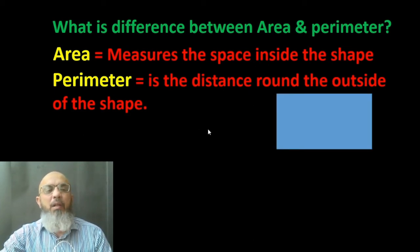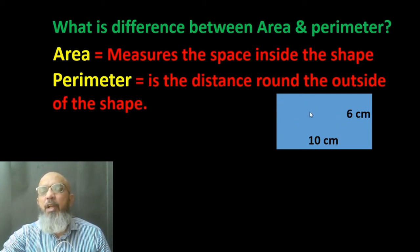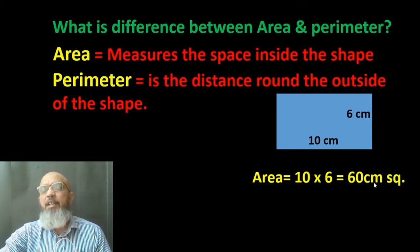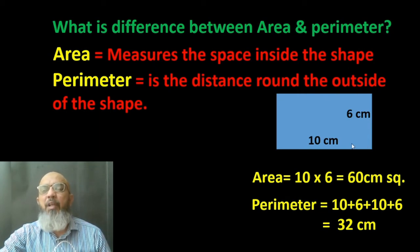You can understand the difference between area and perimeter with a simple example. We have a rectangle with length 10 centimeters and width 6 centimeters. Its area is length multiplied by width: 10 × 6 = 60 square centimeters. Its perimeter is the sum of all four sides: 10 + 6 + 10 + 6 = 32 centimeters.